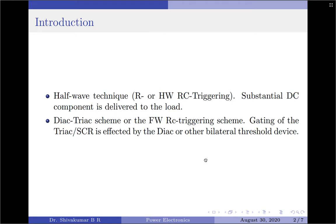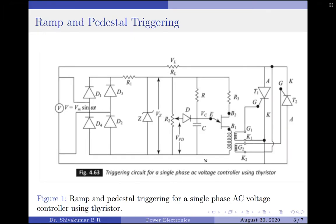One of the disadvantages of these phase control circuits is that they suffer from gain or sensitivity limitations. Hence, the ramp and pedestal triggering circuit came into picture. In this diagram, you are looking at the ramp and pedestal triggering circuit for a single-phase AC voltage controller using a thyristor — this is what the ramp and pedestal circuitry actually is.